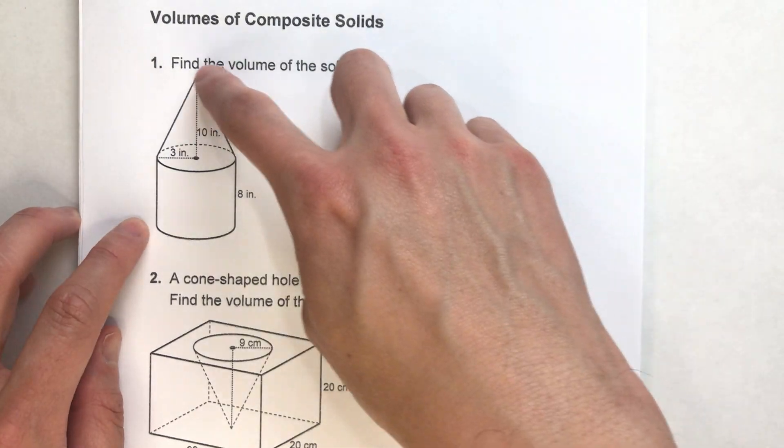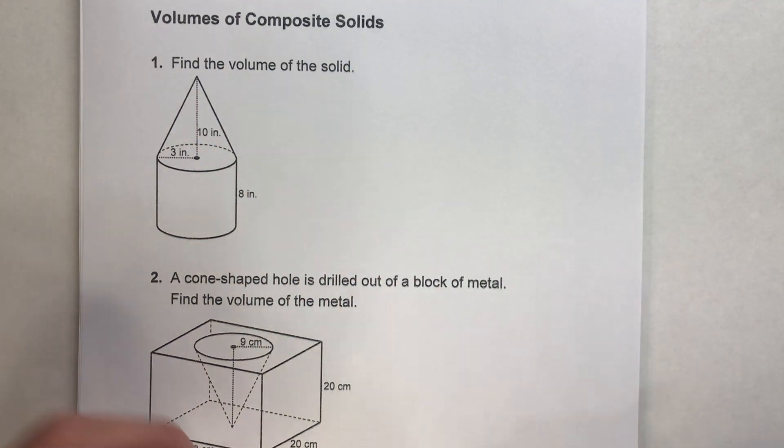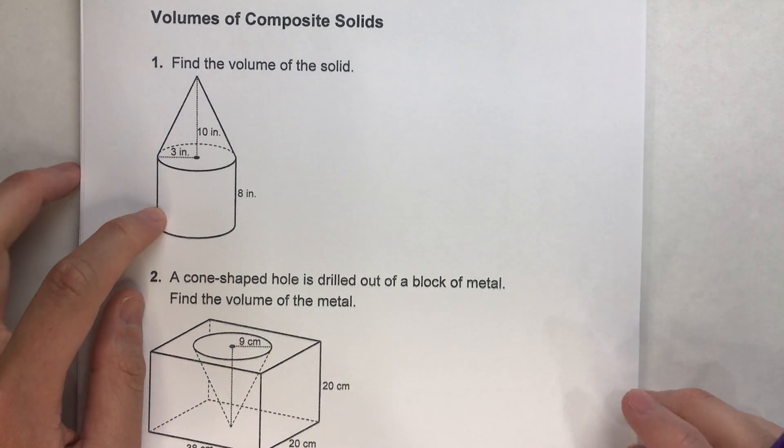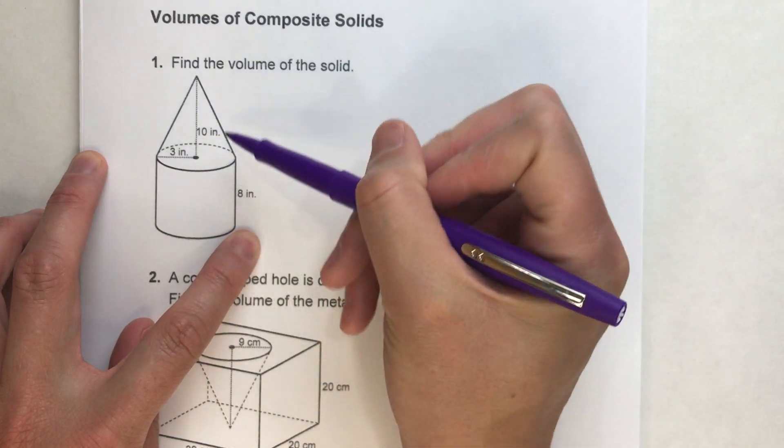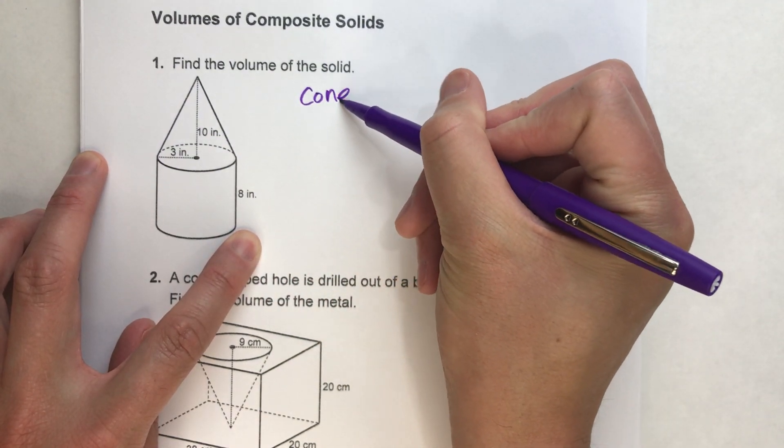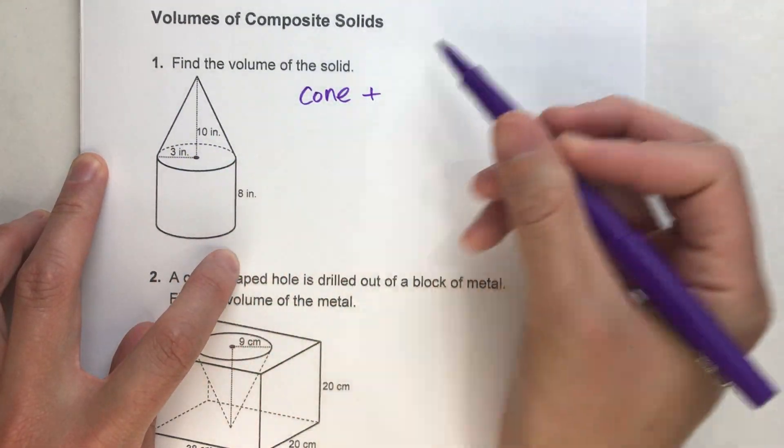For number one, find the volume of this solid. Your first step is to figure out what is this solid made up of. And if you look carefully, you can kind of tell the top part is a cone and the bottom part is a cylinder.